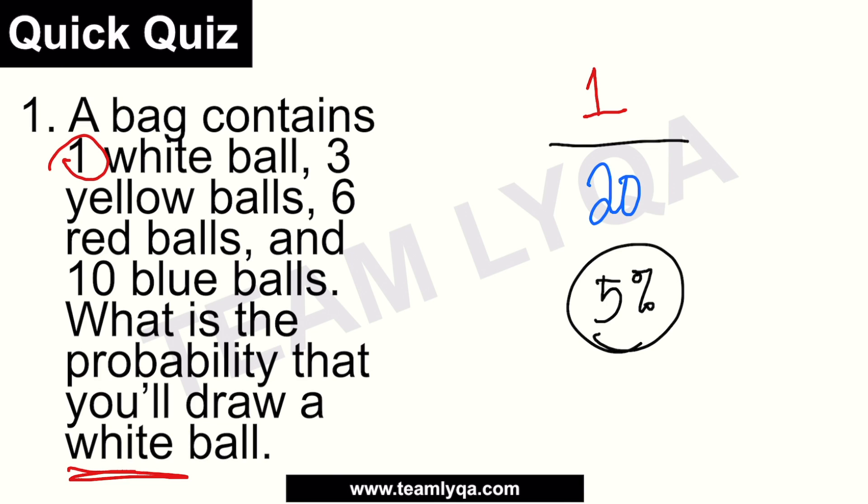If you're confused how one over twenty becomes five percent — we have a video lesson on converting fractions to percentages. One divided by twenty gives you the decimal. Since one over ten is ten percent, one over twenty is half of that — five percent.